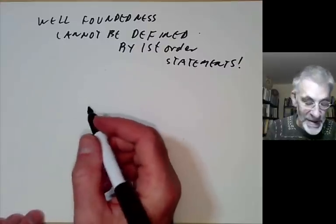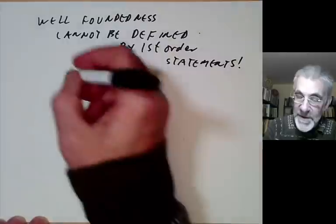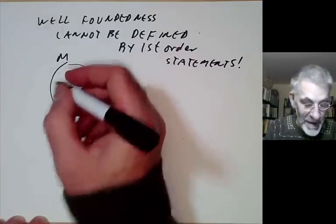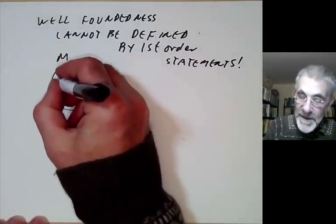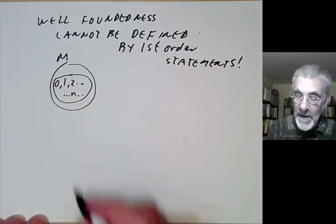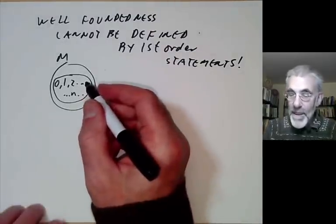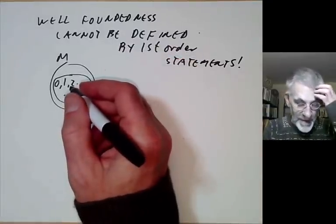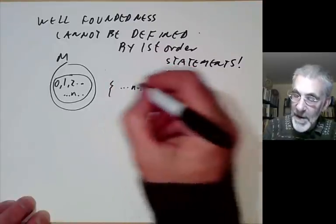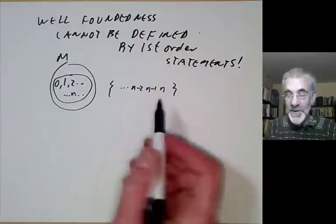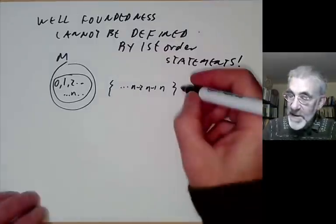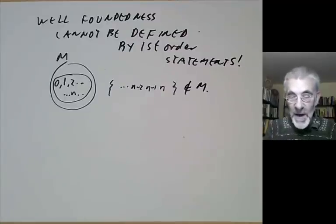The reason is pretty much the same as the earlier example. If we look at a model M with the usual integers 0, 1, 2, ... and also some strange non-well-founded integers, someone outside can see the set {N, N-1, N-2, ...} and see it's not well-founded because it has an infinite decreasing sequence of positive integers. However, this set is not in the model M, so someone living in M can't see it.